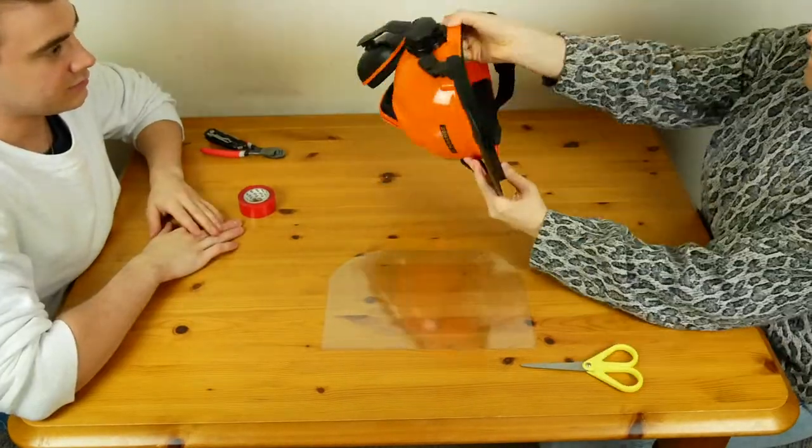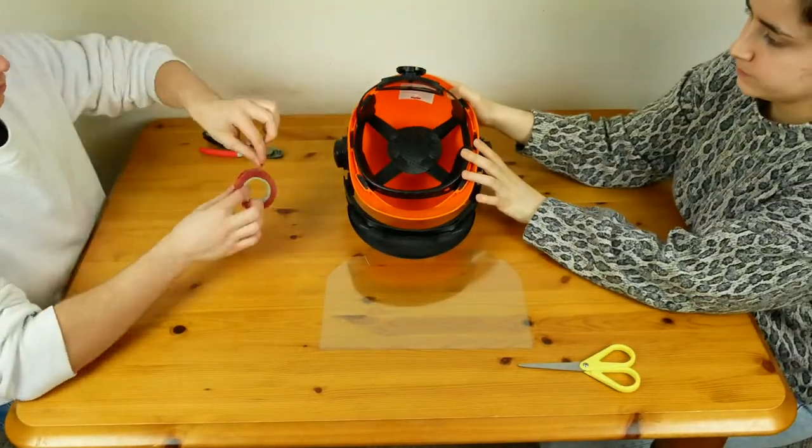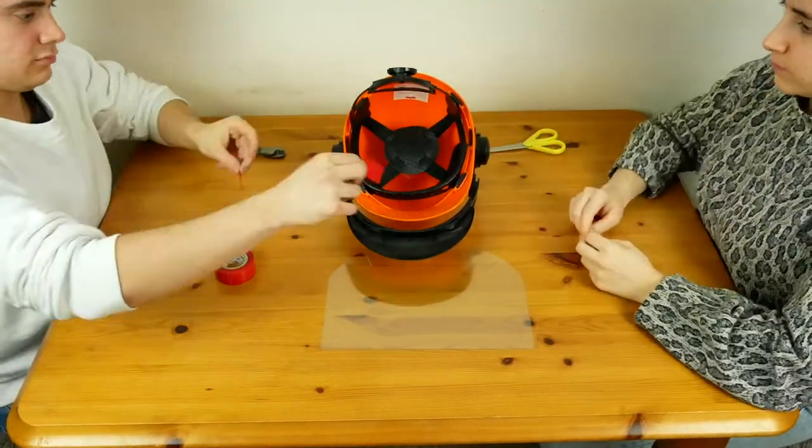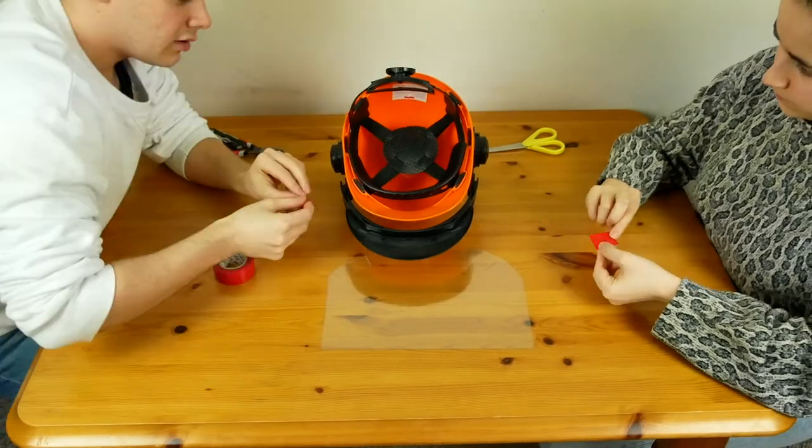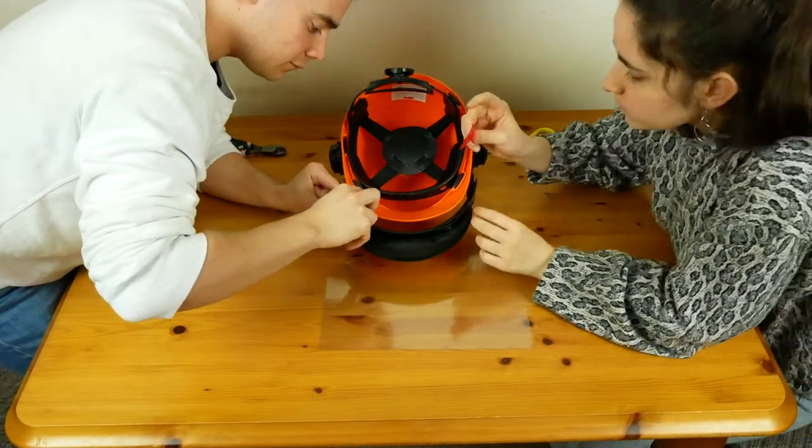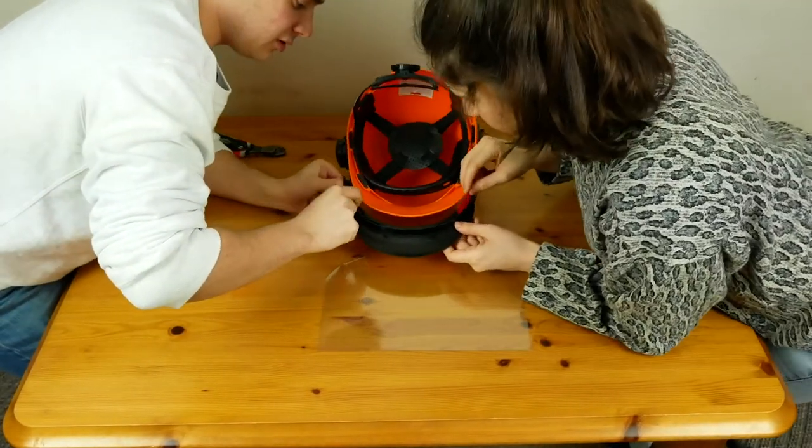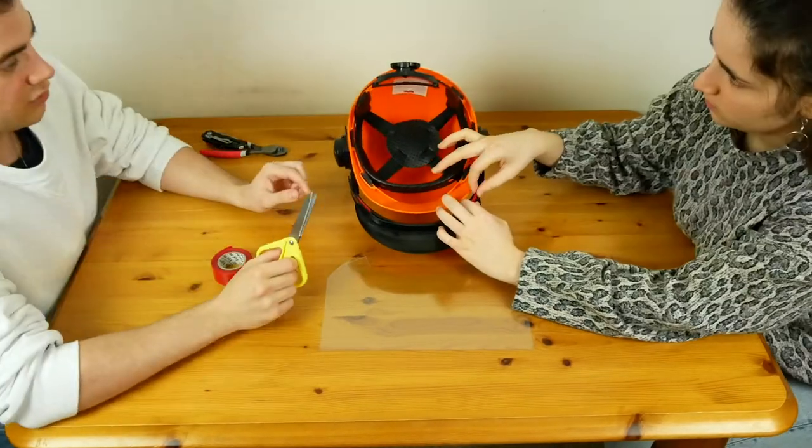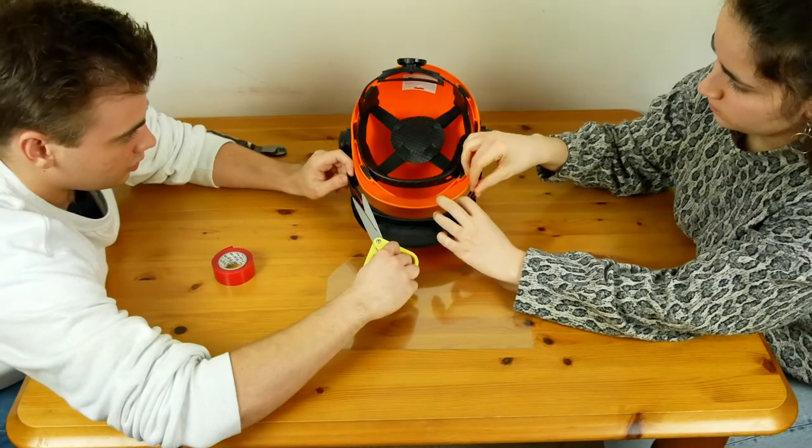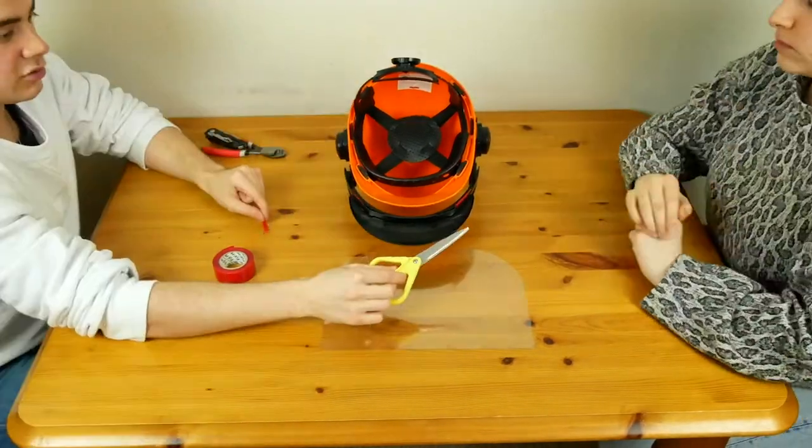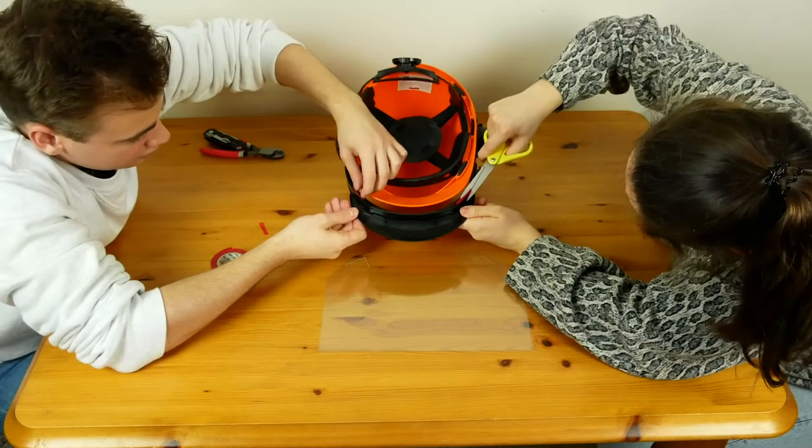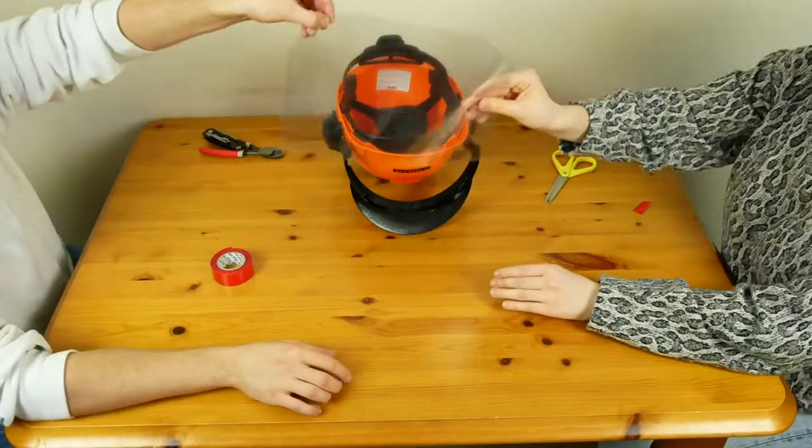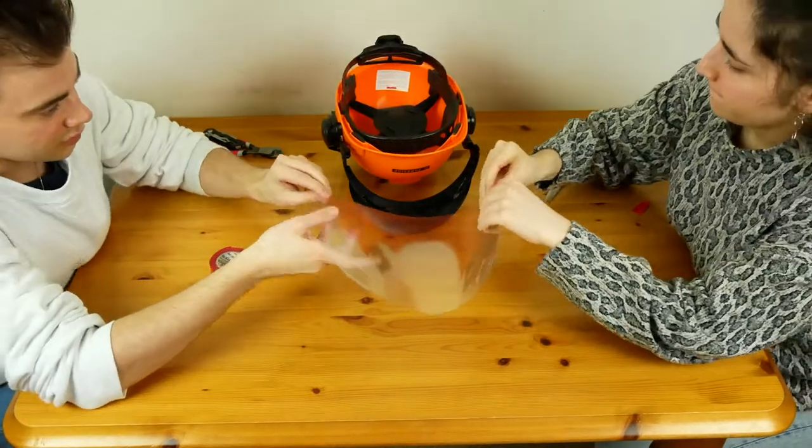We will now place the sheet inside the helmet in the position where the visor would have been. So we are placing the double-sided tape in that position, cutting off the parts that stick out, and sticking the sheet on the double-sided tape.